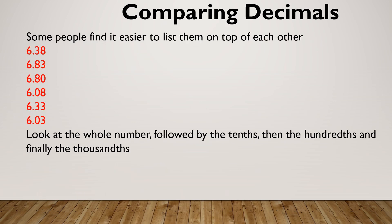I find it easier to put these numbers on top of each other. This helps us to better focus on each place value. So in the units, they're all a six. So let's move on to the tenths. I've got a three, an eight, an eight, a zero, a three and a zero.